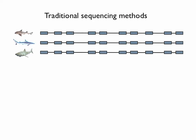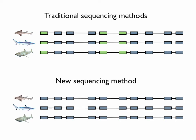Previous shark studies have used only a handful of DNA regions, sequencing them one at a time. But this has not been enough to get a robust shark tree — one that represents the true relationships among the species. From my research, I am using a revolutionary DNA sequencing method to simultaneously collect hundreds of DNA regions, providing hundreds of thousands of characters to generate a robust phylogenetic tree for the sharks.